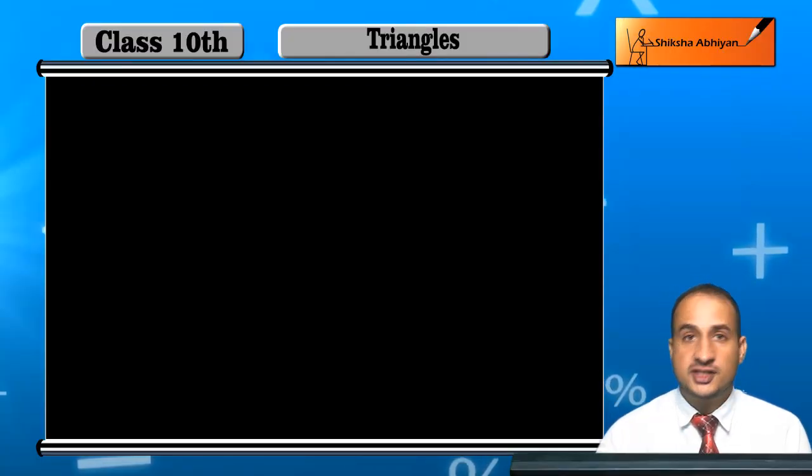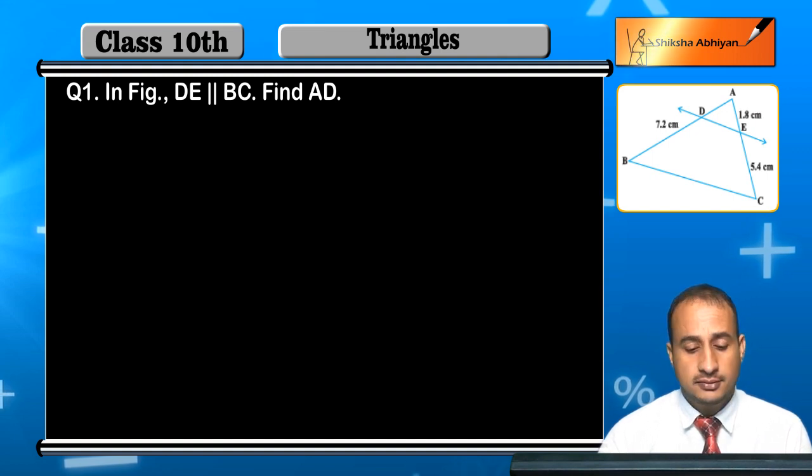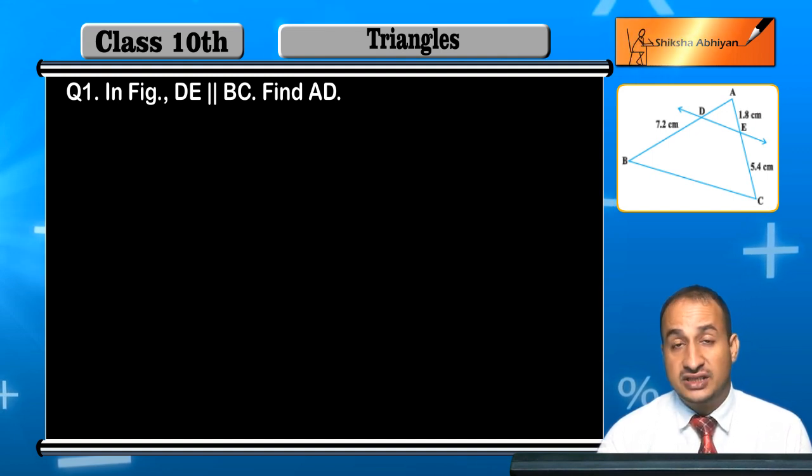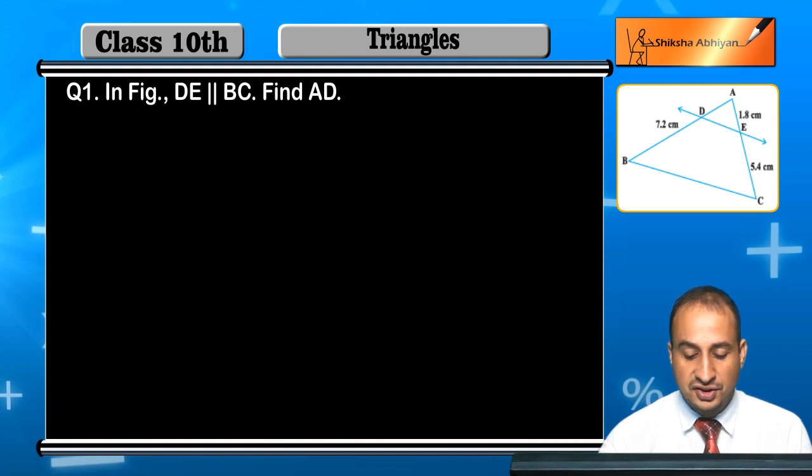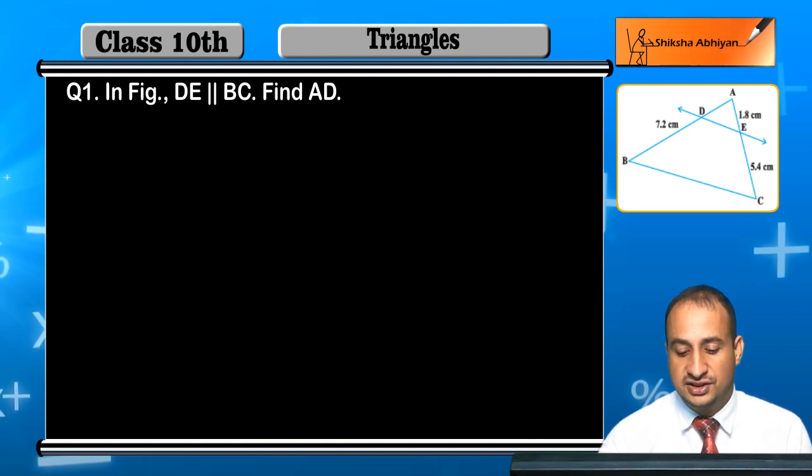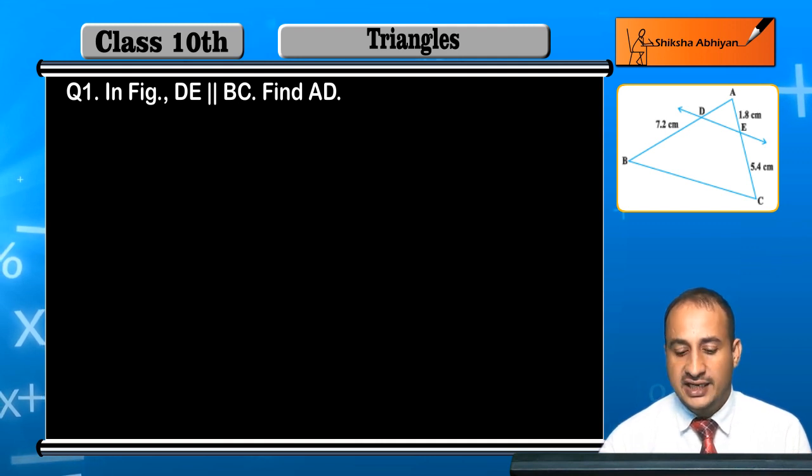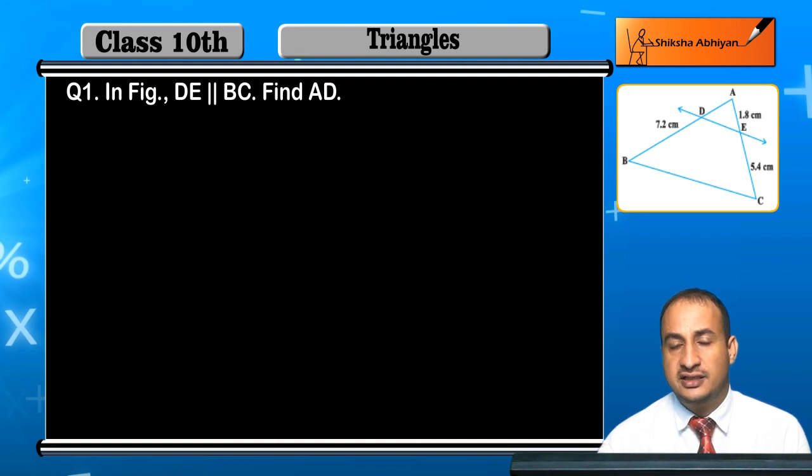Now students, we will start the first exercise of chapter Triangles. In the figure, you can see triangle ABC where DE is parallel to BC. DE is parallel to one side of the triangle BC. Find AD.